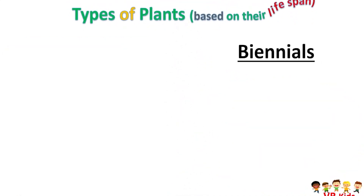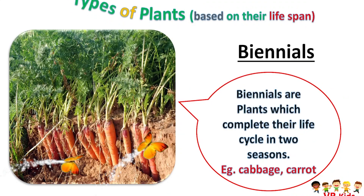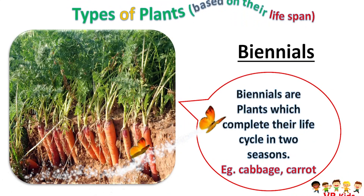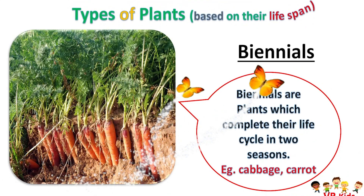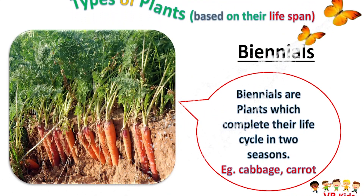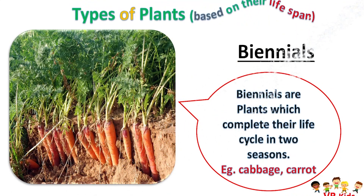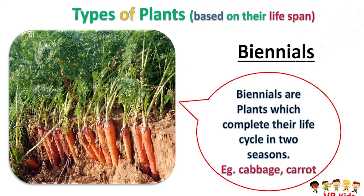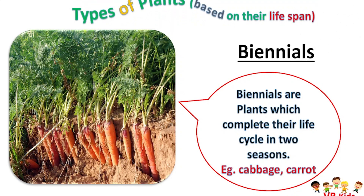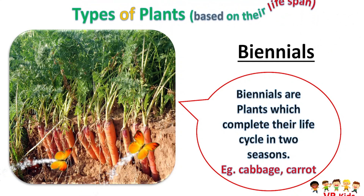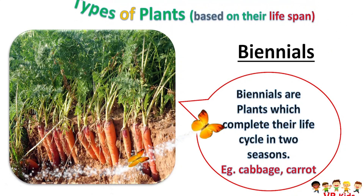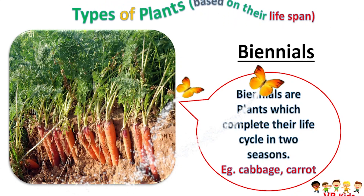Next, biennials. Biennials are plants which complete their life cycle in two seasons. Examples: cabbage and carrot.